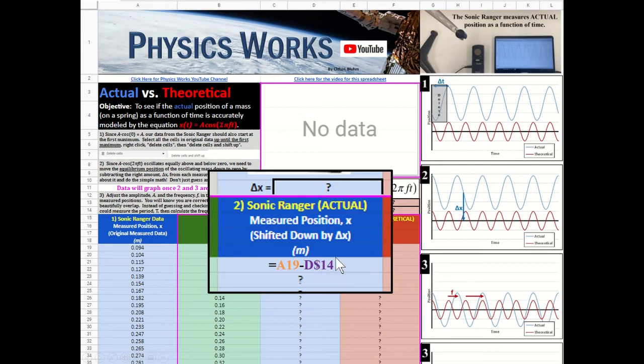Putting a dollar sign in front of the 14 holds that cell right at row 14. So if I were to copy that cell down one, this would update and now say A20. But this would still say D14 because it was frozen right there.